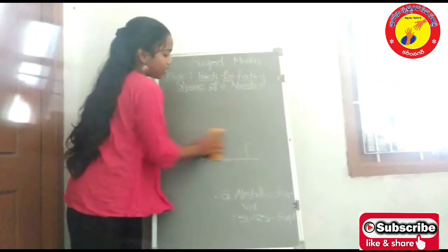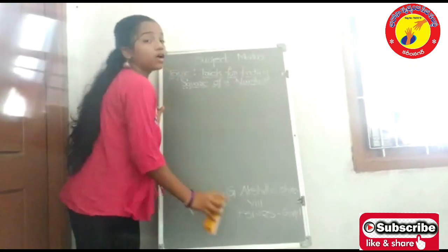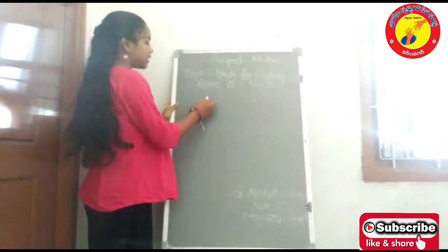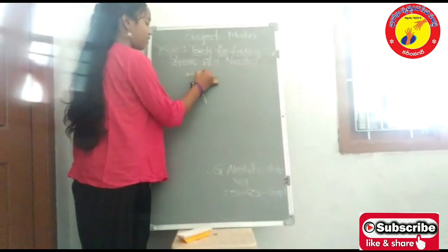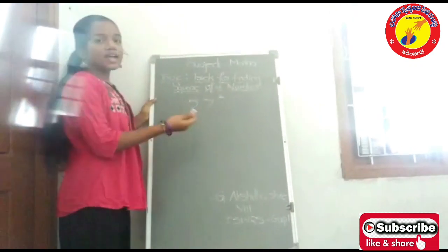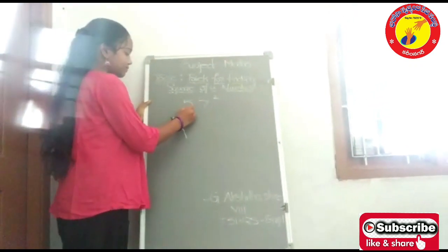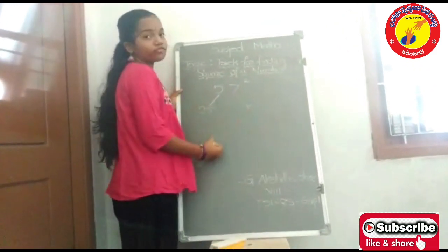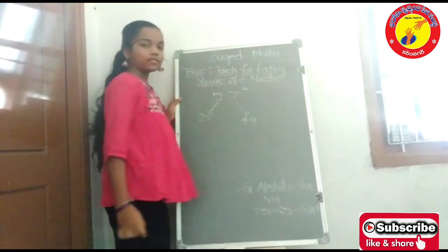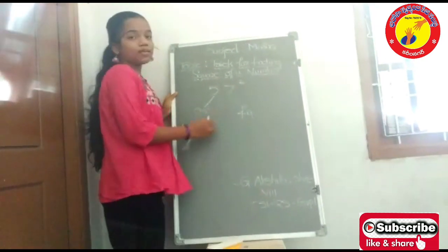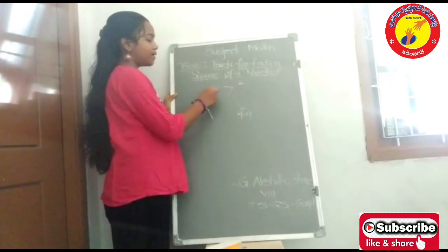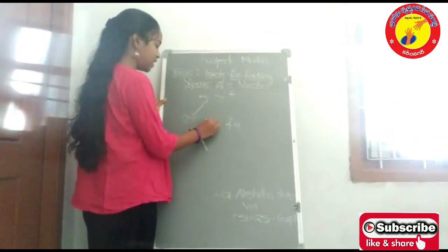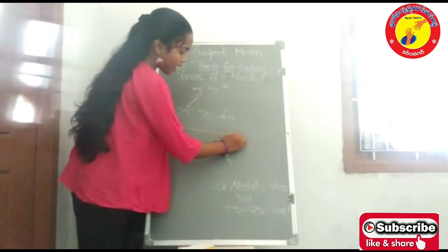And here, we're going to solve couple of sums to understand this method better. So, that is, 57 squared. That is the process which we have done earlier. Square of 5 is 25 and the square of 7 is 49. The middle number which we have to get is, multiply both the numbers. 5 into 7 is 35. 35 into 2 is 70. How to write it?